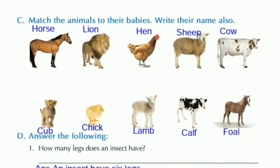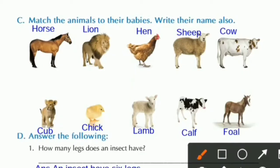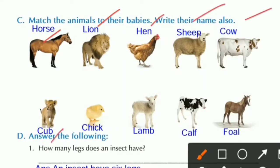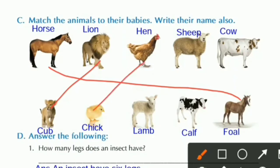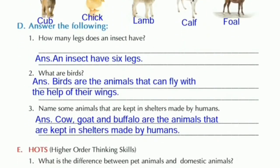Next page, exercise C: Match the animals to their babies and write their names. Animals listed: horse, lion, hen, sheep, and cow. Babies listed: cub, chick, lamb, calf, and foal. Matching: horse's baby is foal, lion's baby is cub, hen's baby is chick, sheep's baby is lamb, and cow's baby is calf.